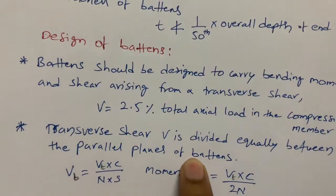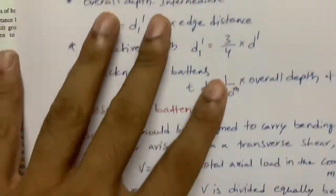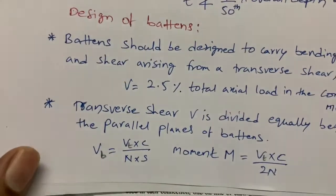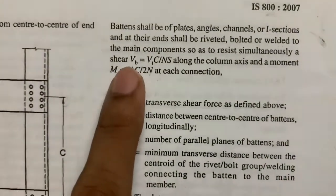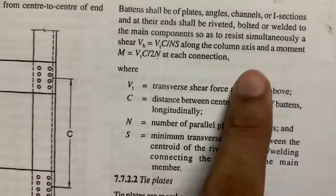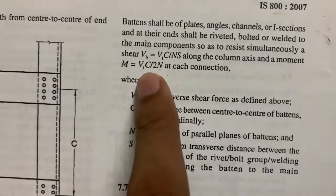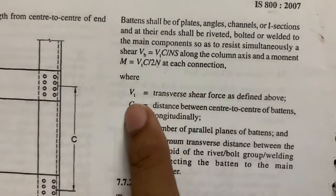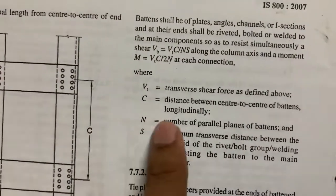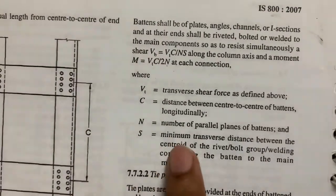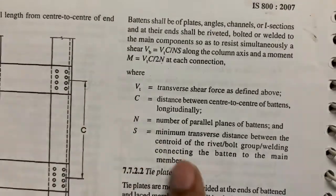We need to distribute this load equally to the parallel planes of the battens. If we get a value like 2000, we distribute it equally. The code specifies Vb equals Vt times c divided by n times s — the shear along the column axis. The moment M equals Vtc divided by 2n at each connection. Here, Vt is the transfer shear force, c is the distance between center of battens, n is the number of parallel planes of battens, and s is the minimum transverse distance between the centroid of the rivet, bolt, or weld group.